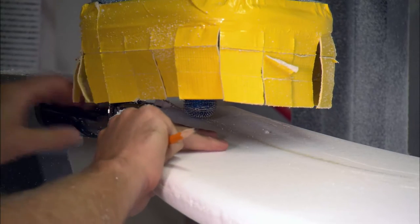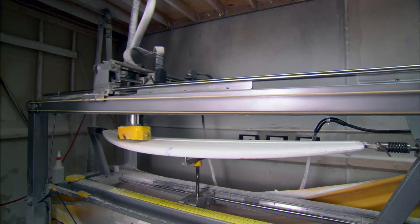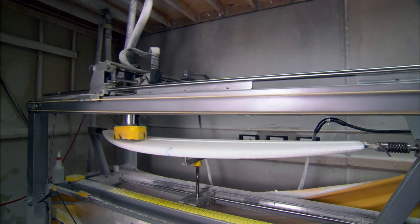a computer-controlled cutter shaves it down even more to just the right shape. First, it refines what surfers call the rocker, which is the banana-like curve of the board. The flatter the curve, the faster the board and the harder it is to control.